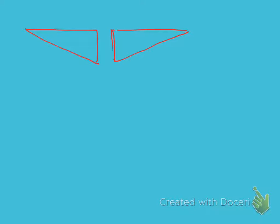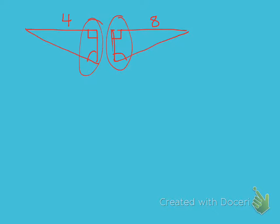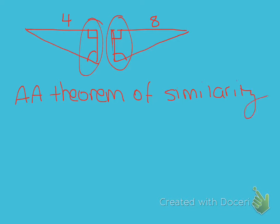Let's say this side is 4 and this side is 8. We know that this angle is congruent to this angle, and this angle is congruent to this angle. Looking at this to prove similarity, this is all the information that we need — these two triangles are similar by the angle-angle theorem of similarity. It's just angle-angle, not angle-angle-side.